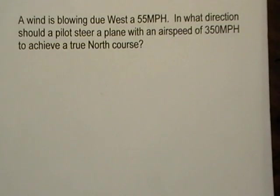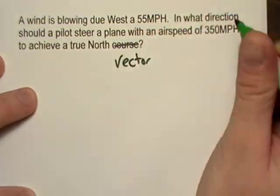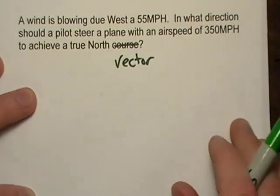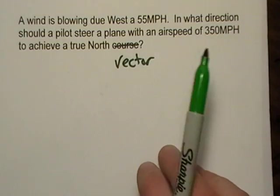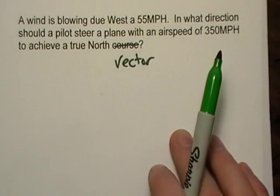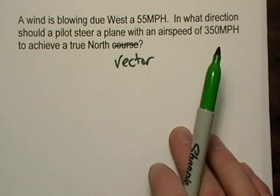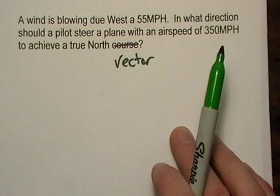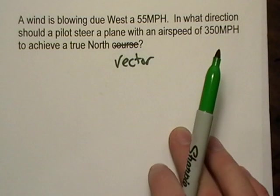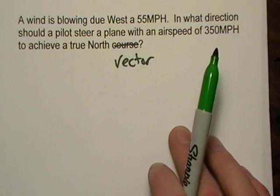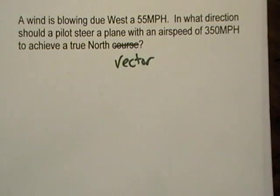First of all, I'm going to cross out a word. I'm going to do some proofreading here - course. I'm going to cross that out and put vector because that's what an airplane does. It's going in a certain direction towards Philadelphia, LA, Indianapolis at a magnitude of 350 miles an hour, 500 miles an hour. Maybe we're in a 747. The 747 is probably one of my favorite planes. I've never been on one, but I think they're cool.